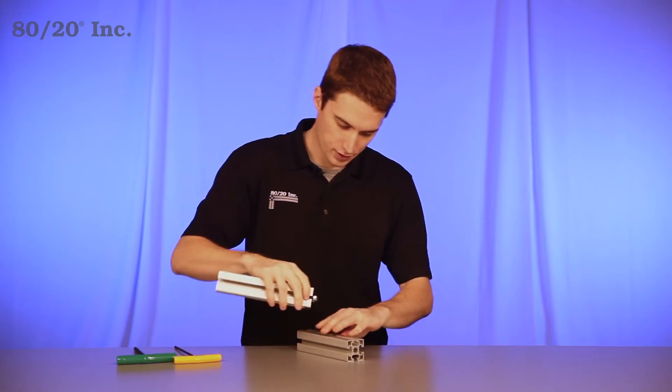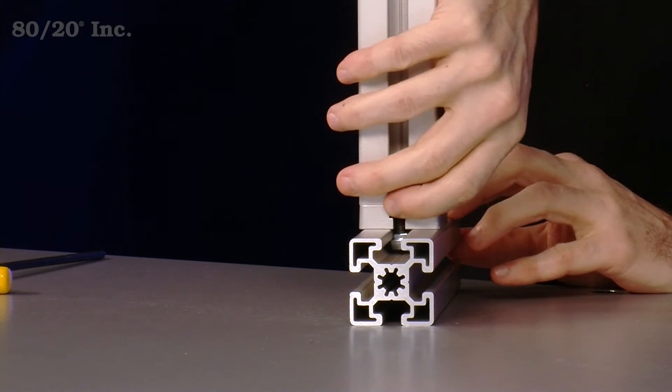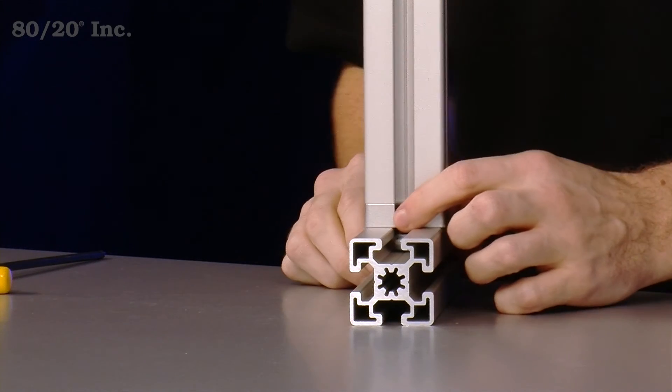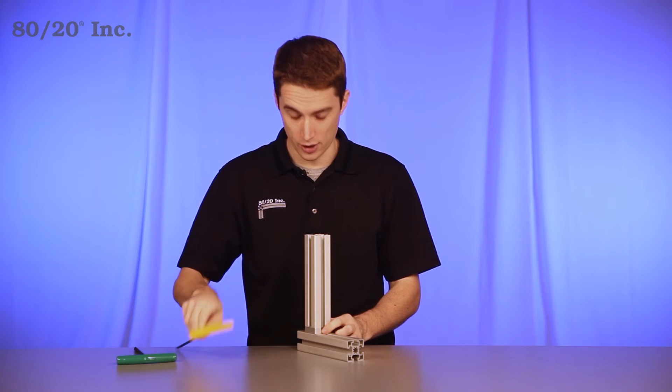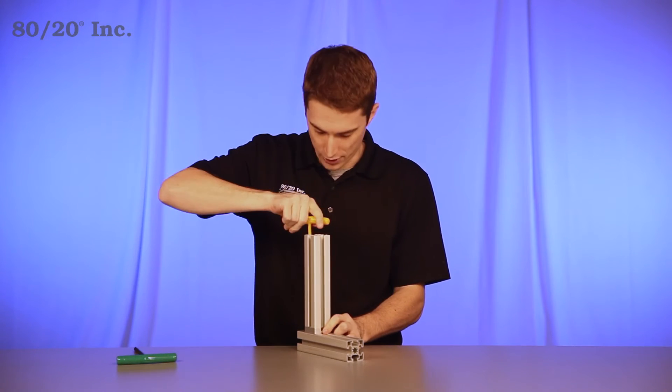We'll grab our other bar and put the T-nuts through the open T-slot. We'll find our desired location on the bar and tighten down with our wrench.